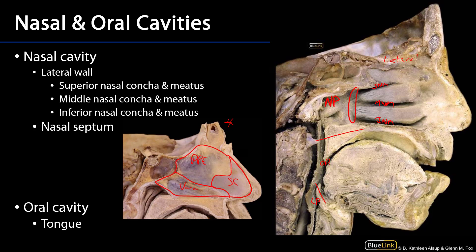As we look at the oropharynx anteriorly, we can come across the oral cavity. The oral cavity has an oral vestibule — that's the space outside of the teeth and the gingiva — and then the oral cavity proper. That oral cavity proper is the region into which the salivary glands drain, and it is largely occupied by the presulcal portion of the tongue. The tongue has two components: a presulcal portion and a postsulcal or pharyngeal portion, because it is within the oropharynx.